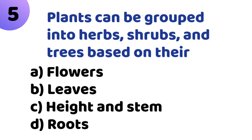Fifth question: Plants can be grouped into herbs, shrubs, and trees based on their — Option A: Flowers. Option B: Leaves. Option C: Height and Stem. Option D: Roots. The correct answer is Option C, Height and Stem.